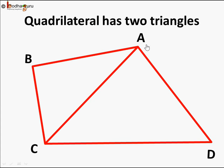So the quadrilateral with vertices A, B, C, and D can be thought of as two triangles: triangle ABC and triangle ACD. If we find the area of triangle ABC plus the area of triangle ACD and sum them, we are going to find the area of this entire quadrilateral. AC is one diagonal, and BD can also be a diagonal — either way you can find it.